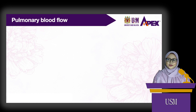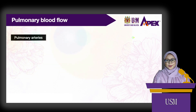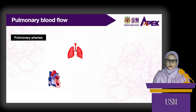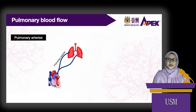The lungs receive two blood supplies. The most important one is from the pulmonary arteries. Blood from the pulmonary arteries is originated from the right ventricle. They carry deoxygenated blood to the lungs for oxygenation.